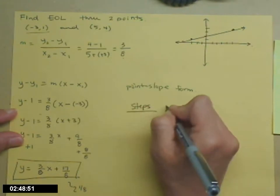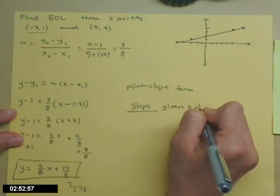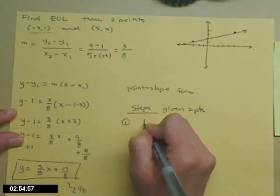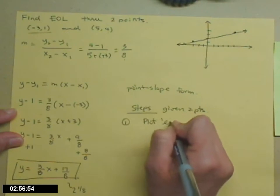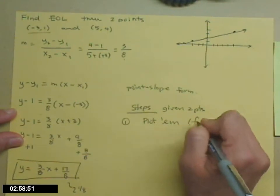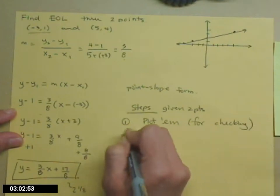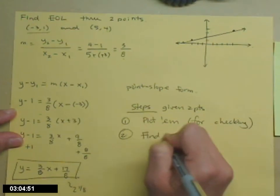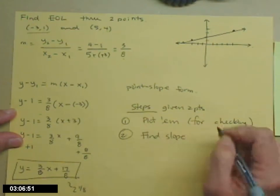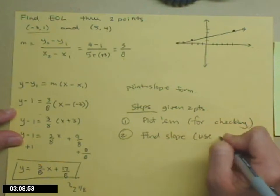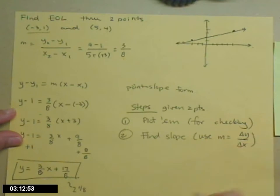Let's go over the steps if you're given two points. Step 1: Plot them for checking purposes. Step 2: Find the slope using the slope formula, change in y over change in x.